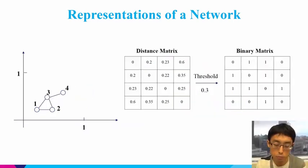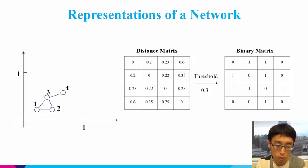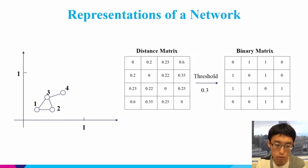After you have this distance matrix, you can easily apply some threshold and link the circles whose distance is smaller than this threshold. For example, I set the threshold at 0.3, so any two nodes whose distance is smaller than 0.3 I will connect to form a network. The distance from circle 1 to circle 3 is 0.3, which is not smaller than 0.3, so I will not connect them. By applying some threshold to the distance matrix, you can get this network.